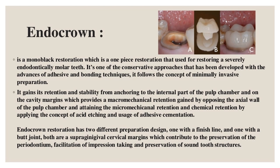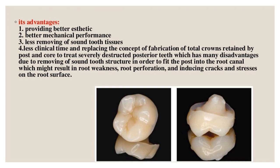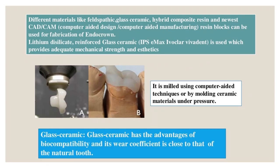Endocrown advantages: better aesthetics, better mechanical performance, less removal of sound tooth tissue, less clinical time. It replaces the concept of fabricating total crowns retained by post and core to treat severely destructed posterior teeth — which has many disadvantages including removal of sound tooth structure, potential root weakness, root perforation, and inducing cracks and stresses on the root surface. Endocrowns are milled using computer-aided techniques or by molding ceramic materials under pressure; materials include feldspathic glass ceramic, hybrid composite resin, and CAD/CAM resin blocks.